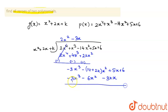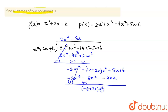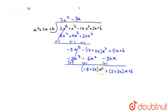Subtracting again, the -3x³ terms cancel, leaving (-14 - (-6) + 2k)x² = (-8 + 2k)x². The x terms give (5 + 3k)x, and we bring down +6.